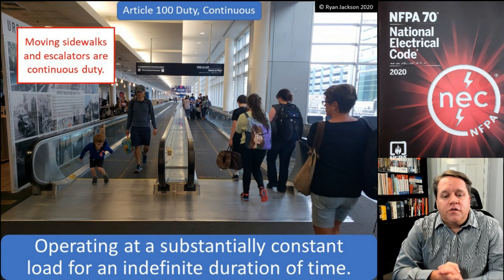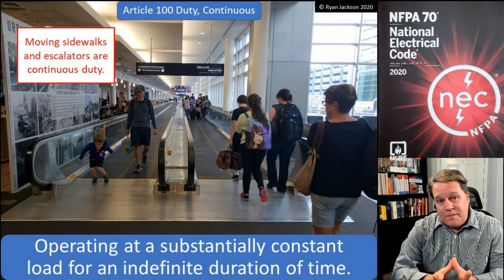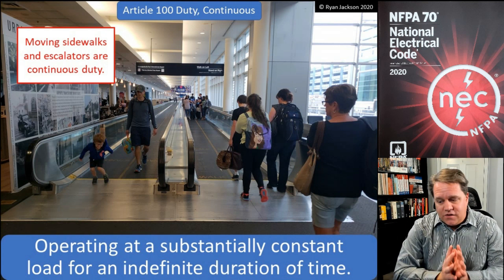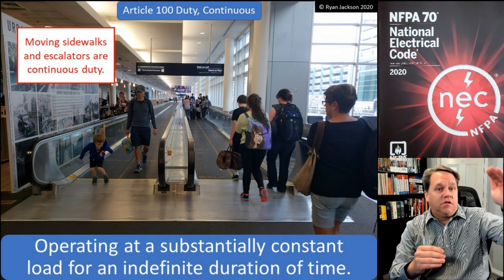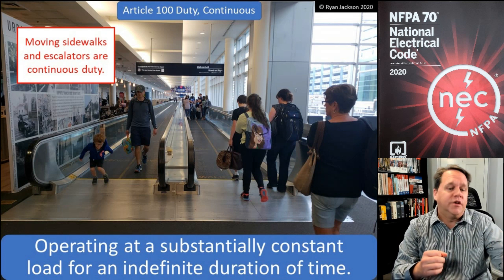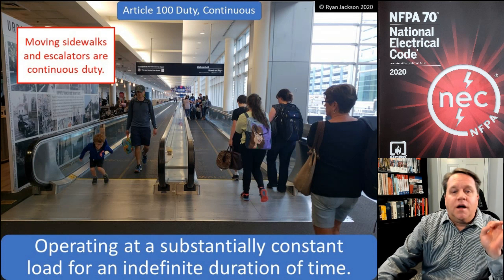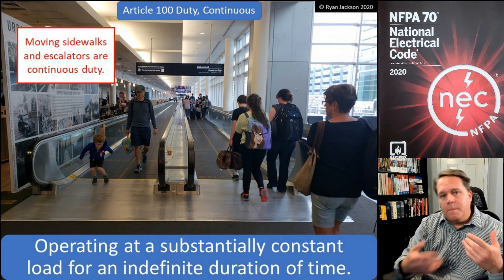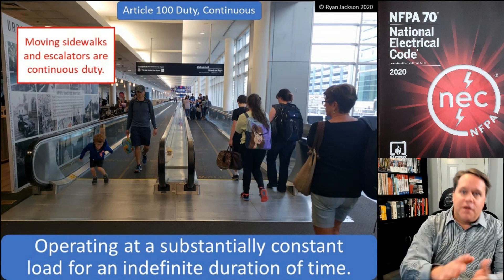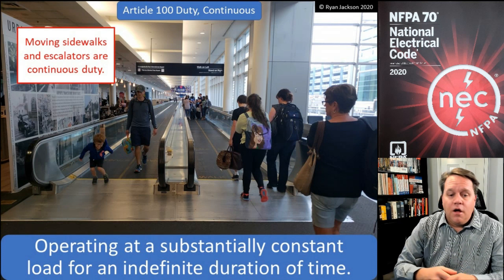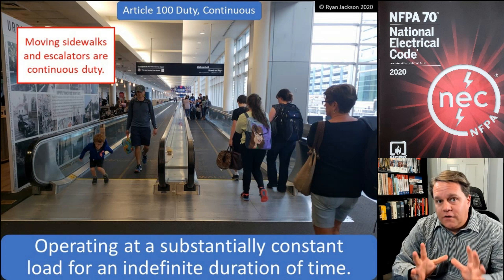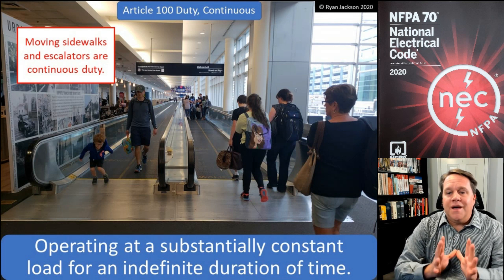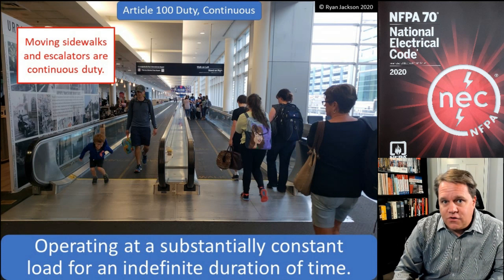Starting with the simplest — continuous duty: something that operates at a substantially constant load for an indefinite duration of time. The best example I can think of would be the moving sidewalk at the airport or an escalator. They don't have a definite starting or stopping point; they're continuously going forever at a substantially constant load. People get on and off, sure, but it's pretty well expected. Most motors per 430.22(e) are considered continuous duty motors unless they have a definite stopping and starting point.